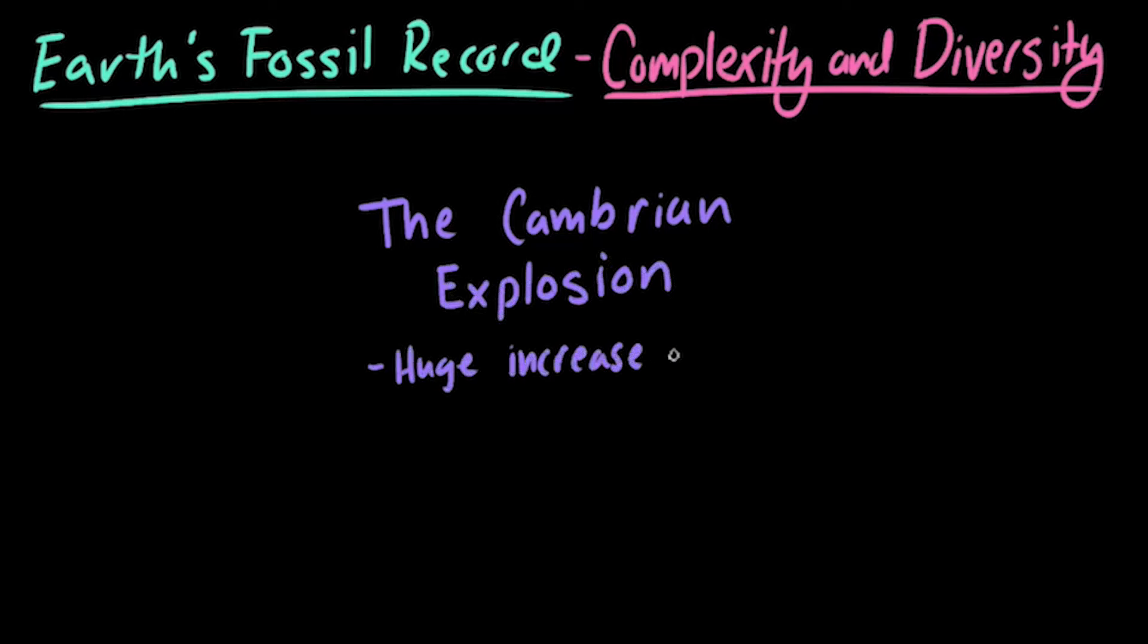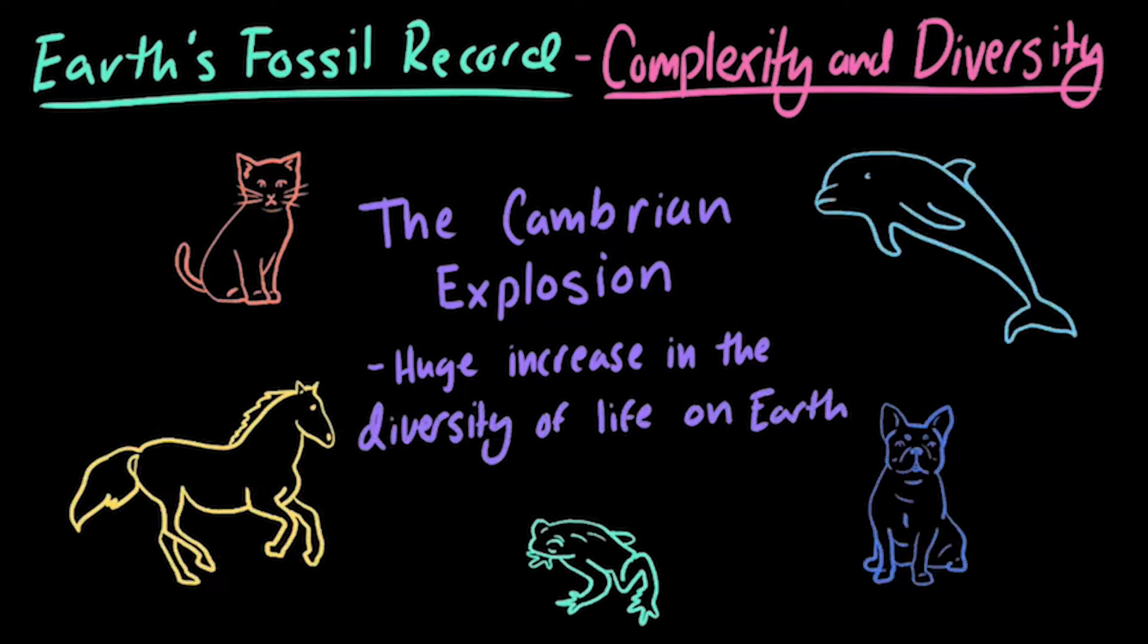...beginning about 539 million years ago, in which there was a huge increase in the diversity of animals on Earth. Almost all of the animal lineages we know today actually got started during this period.